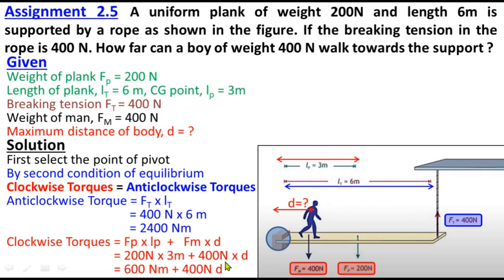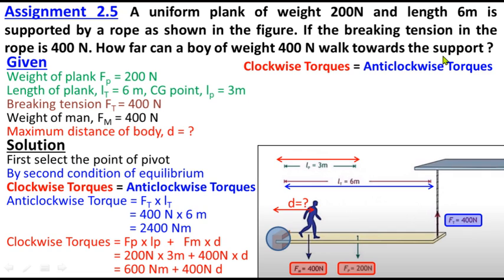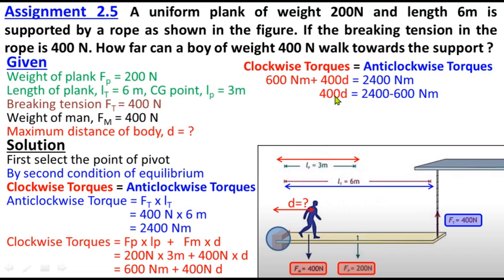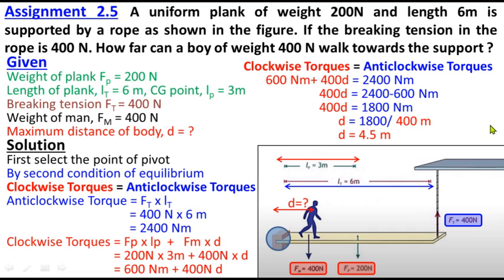200 multiplied by 3 equals 600. Setting up the equation: 600 newton meter plus 400D equals 2400 newton meter. Solving: 400D equals 2400 minus 600 equals 1800, so D equals 1800 divided by 400 meter.